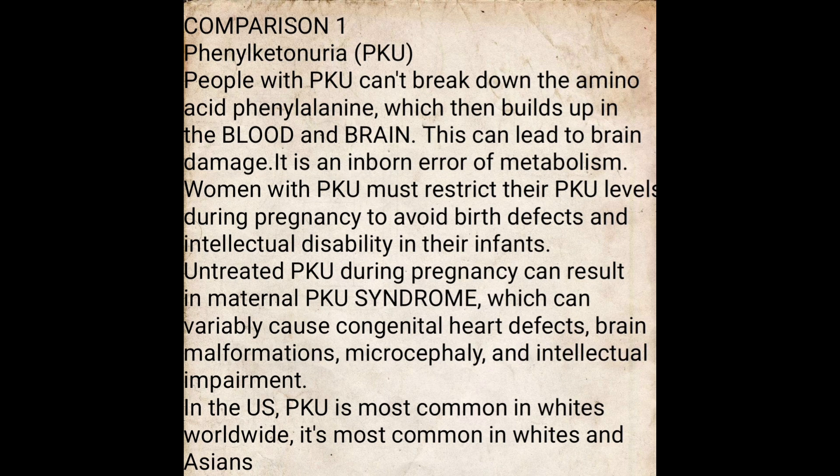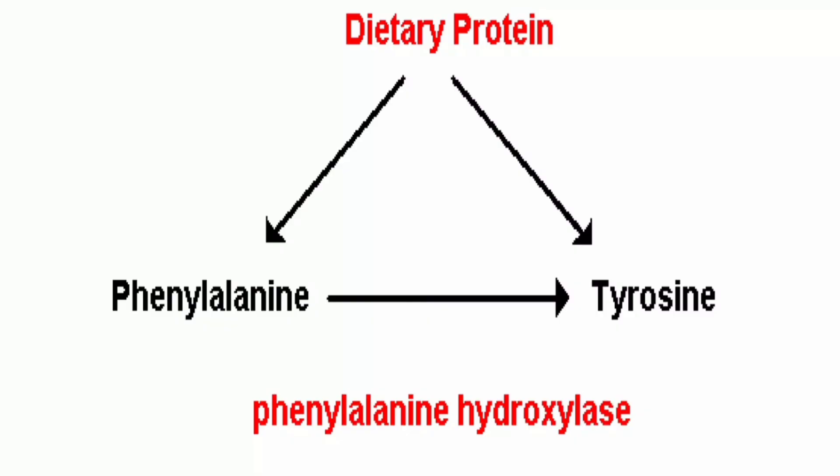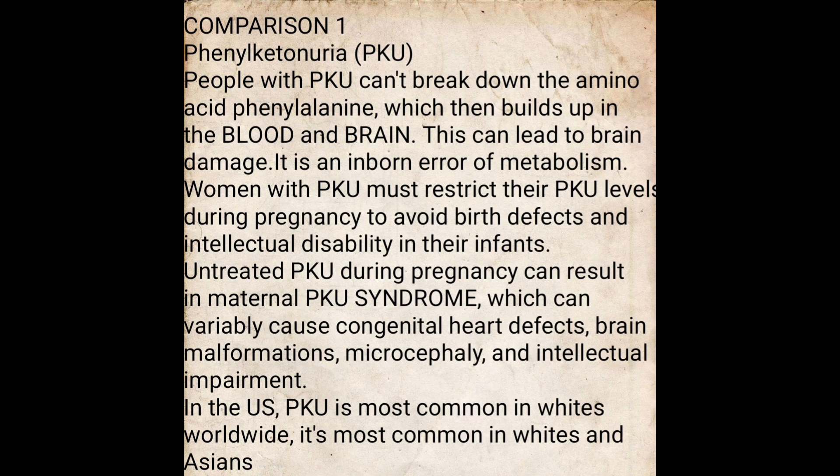People with PKU cannot break down the amino acid phenylalanine, which then builds up in the blood and brain. This can lead to brain damage. It is an inborn error of metabolism. Women with PKU must restrict their phenylalanine level during pregnancy to avoid birth defects and intellectual disability in their infant. Untreated PKU during pregnancy can result in maternal PKU syndrome, which can cause congenital heart defects, brain malfunction, microcephaly, and intellectual impairment.